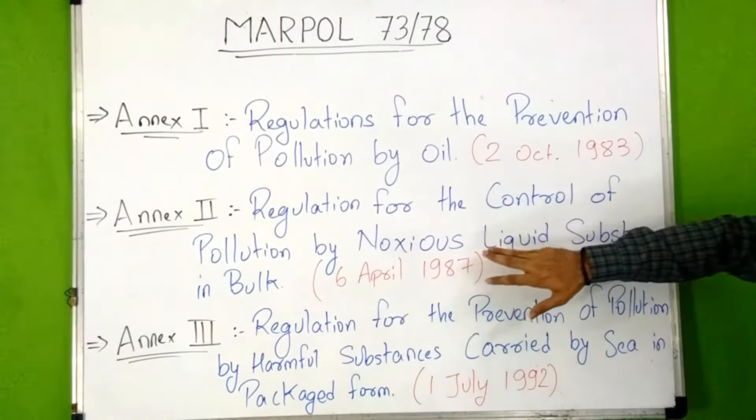So these were the six annexes of MARPOL 73/78 covering the major sources of ship-generated pollution. In our next video we will discuss each of these annexes one by one separately. This was the introduction of MARPOL 73/78 and how it came into force.